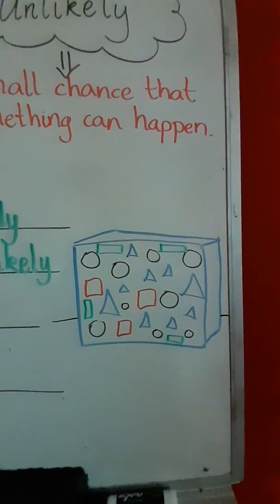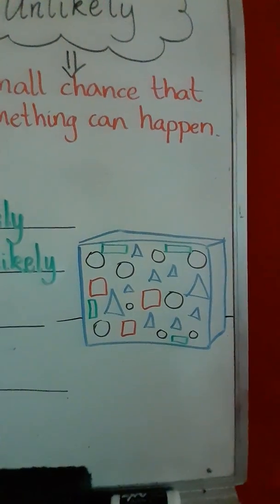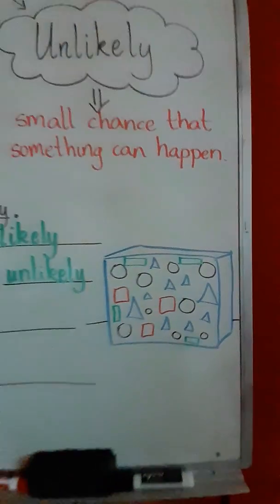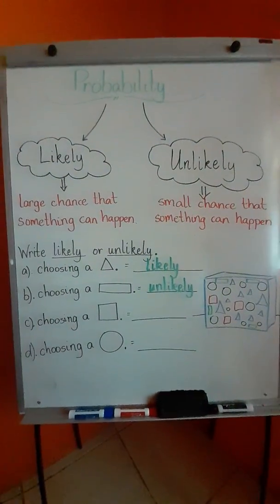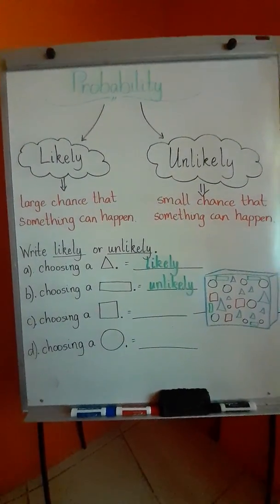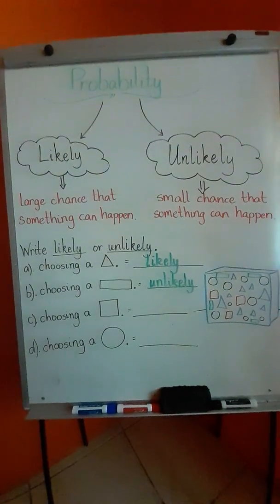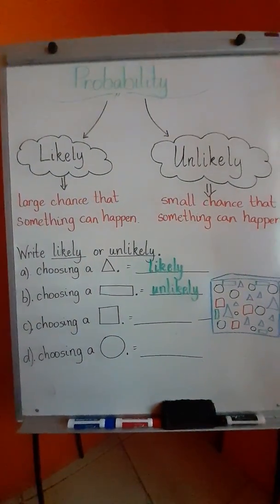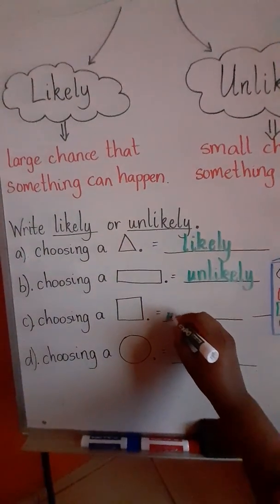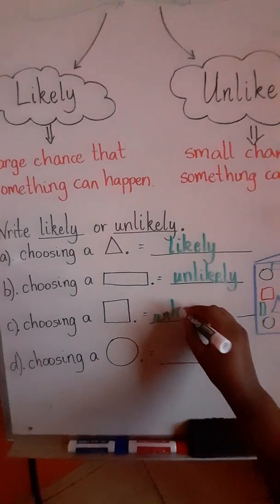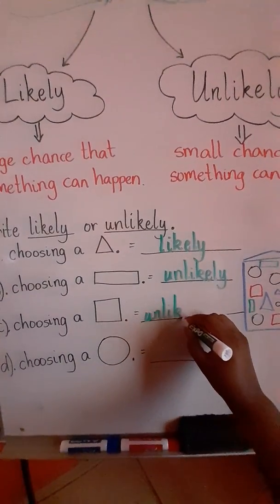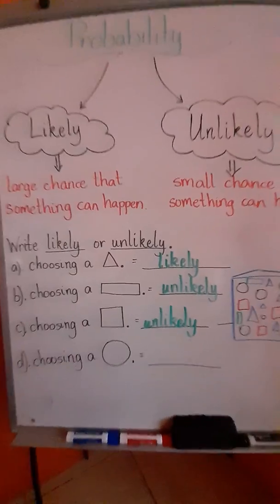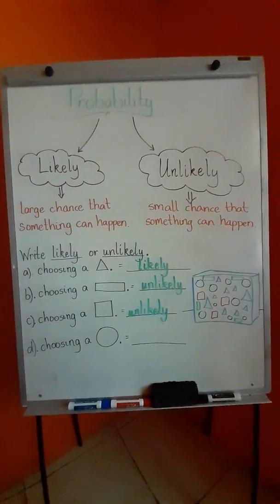It seems that we only have 3 squares in our box. So that means it is a small chance of us selecting a square. Because the chances are small, we will write the term unlikely. If you got that, great job.